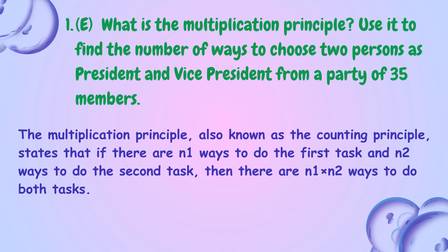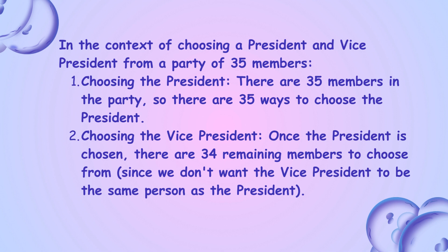What is the multiplication principle? Use it to find the number of ways to choose two persons as president and vice president from a party of 35 members. The multiplication principle, also known as the counting principle, states that if there are n1 ways to do the first task and n2 ways to do the second task, then there are n1 times n2 ways to do both tasks. For choosing the president, there are 35 members, so there are 35 ways to choose the president.